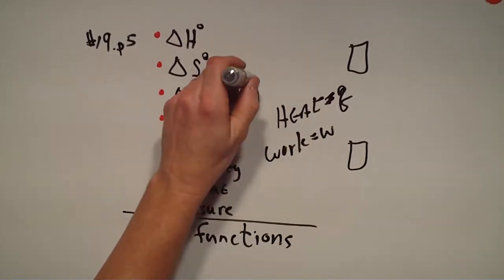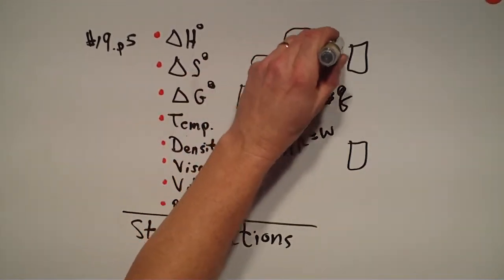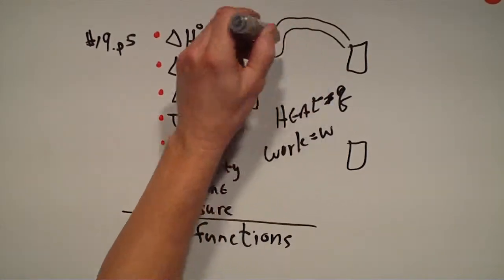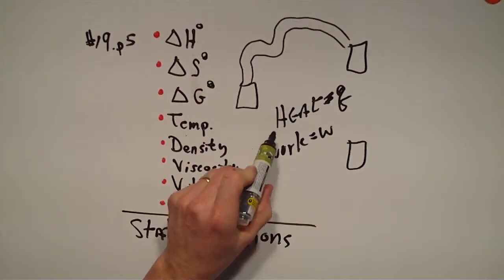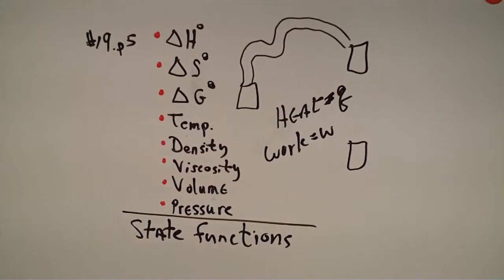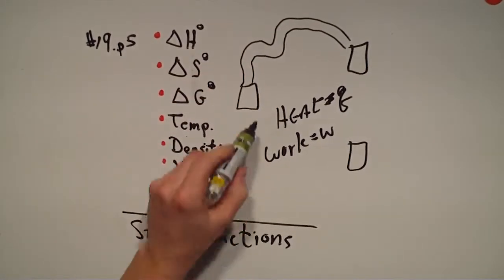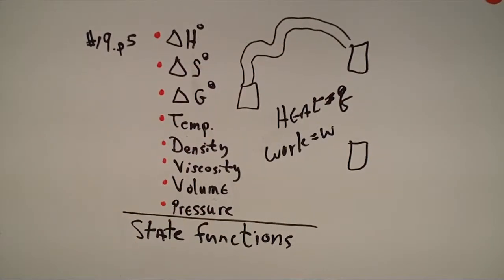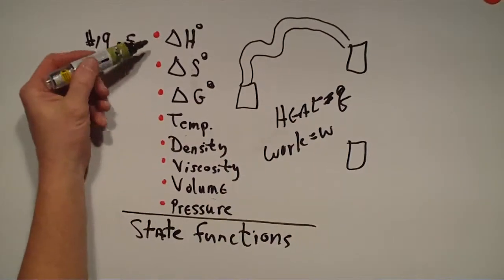These two things would be more like the trail that you travel to get from point A to point B would be heat and work. So the trail to get from here to there is not a state function. The destinations are the state functions like you see here.